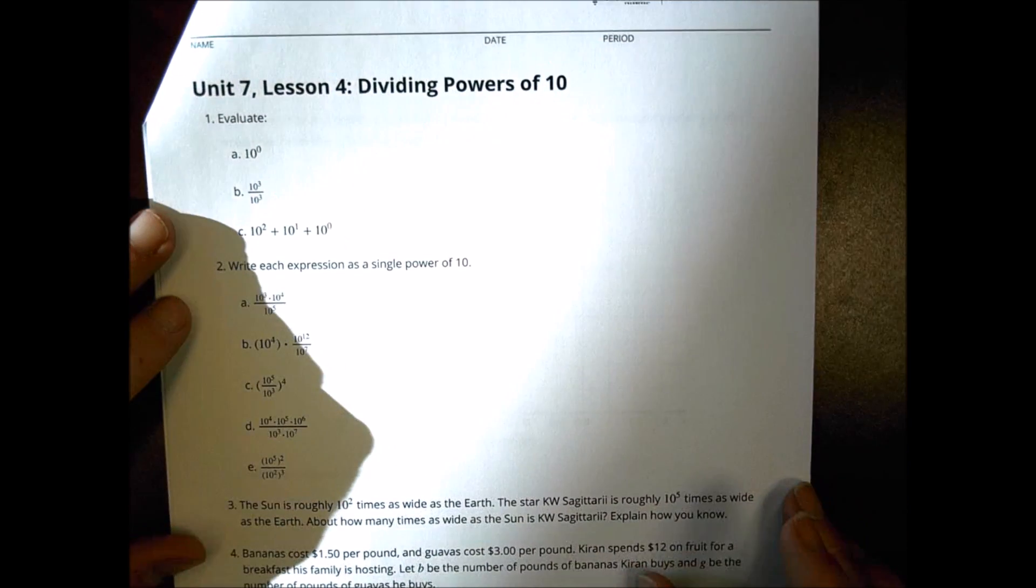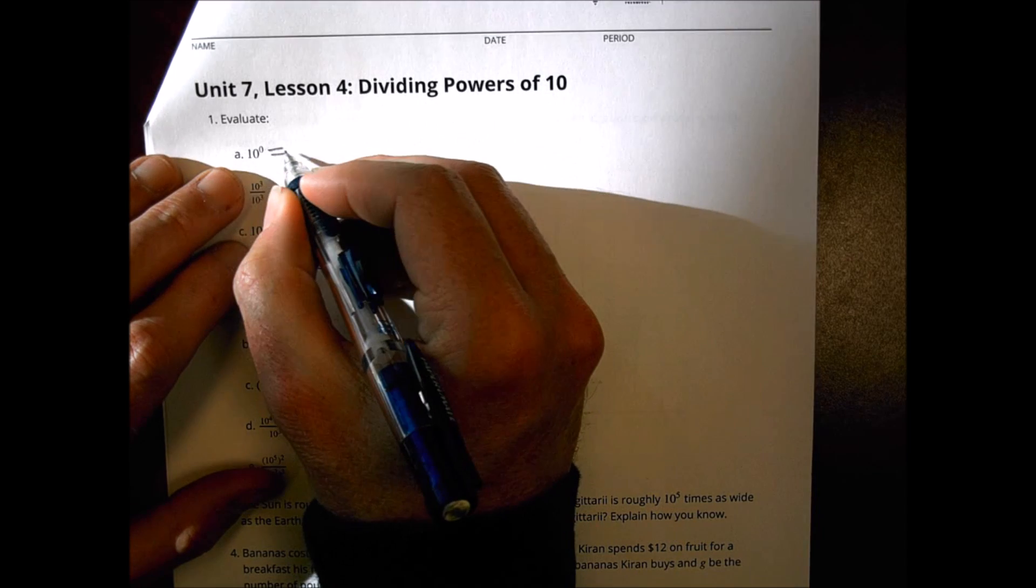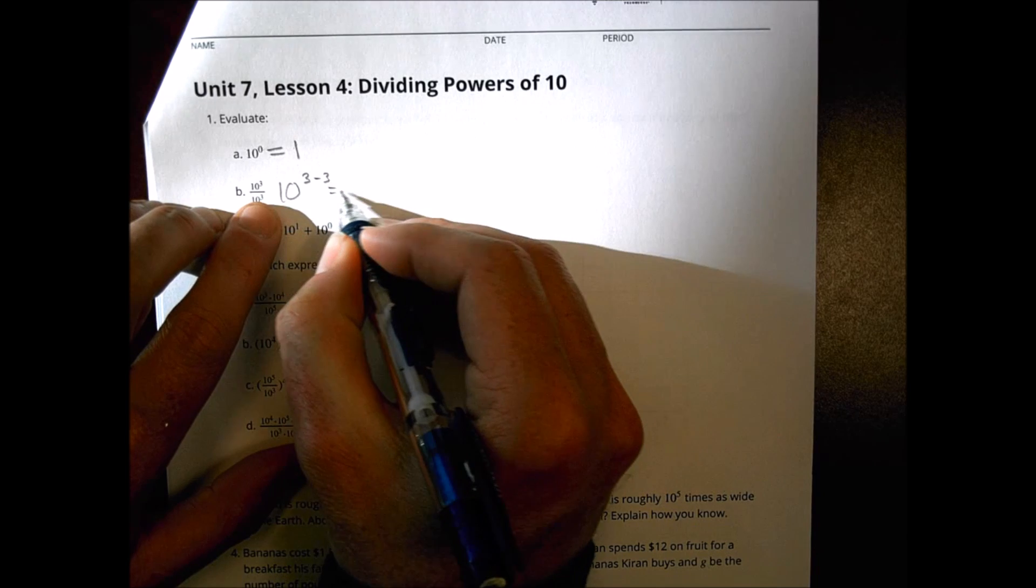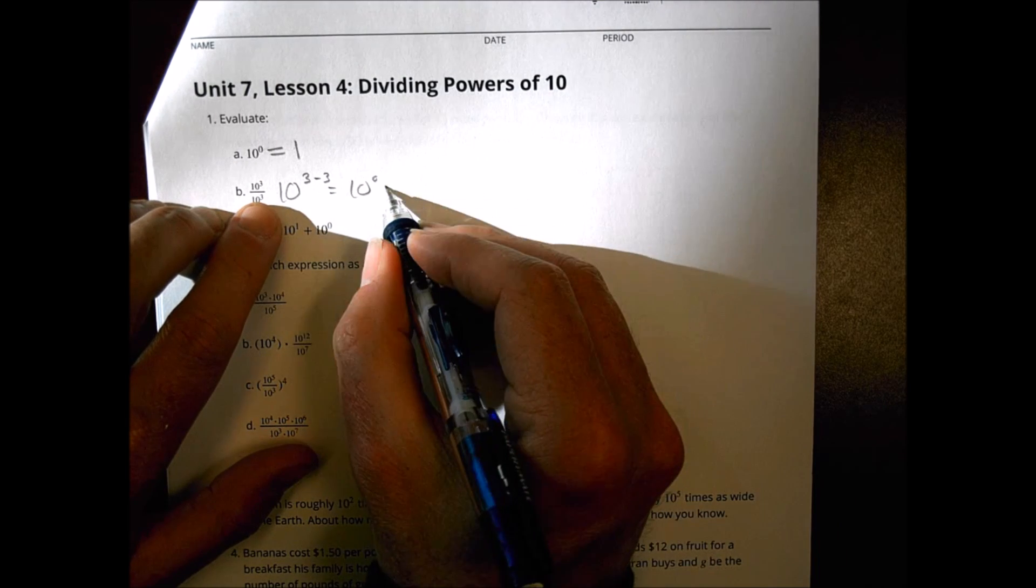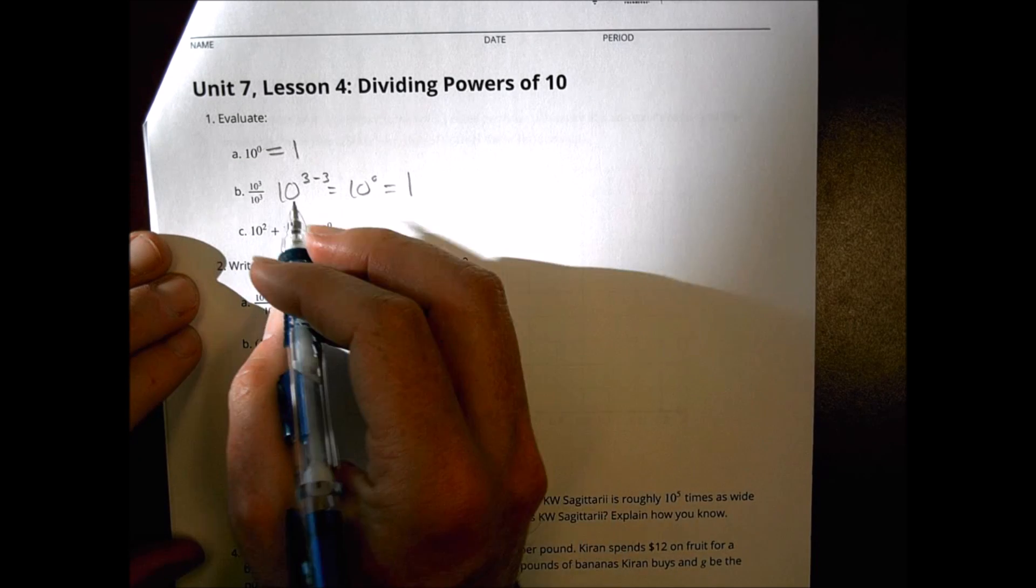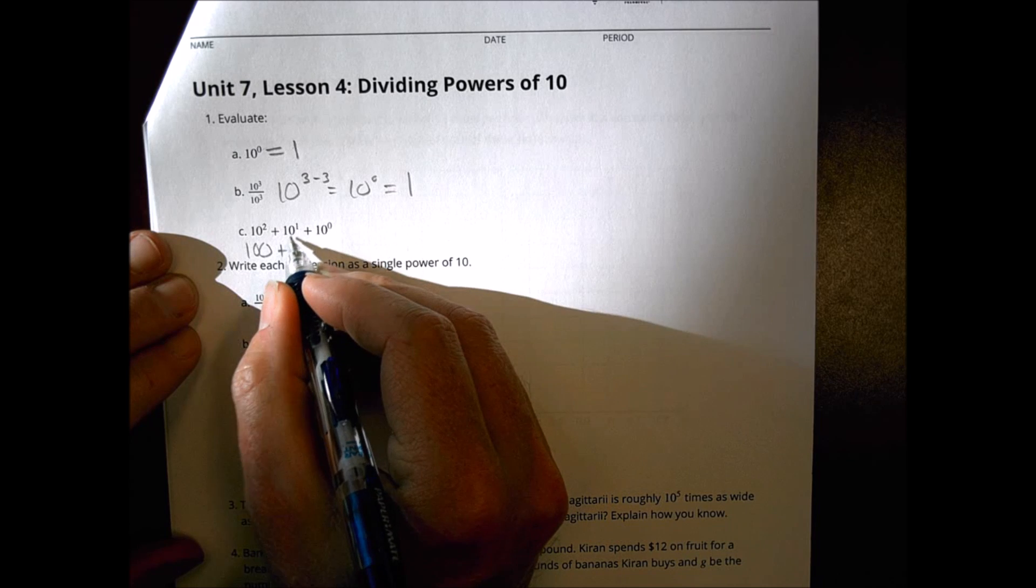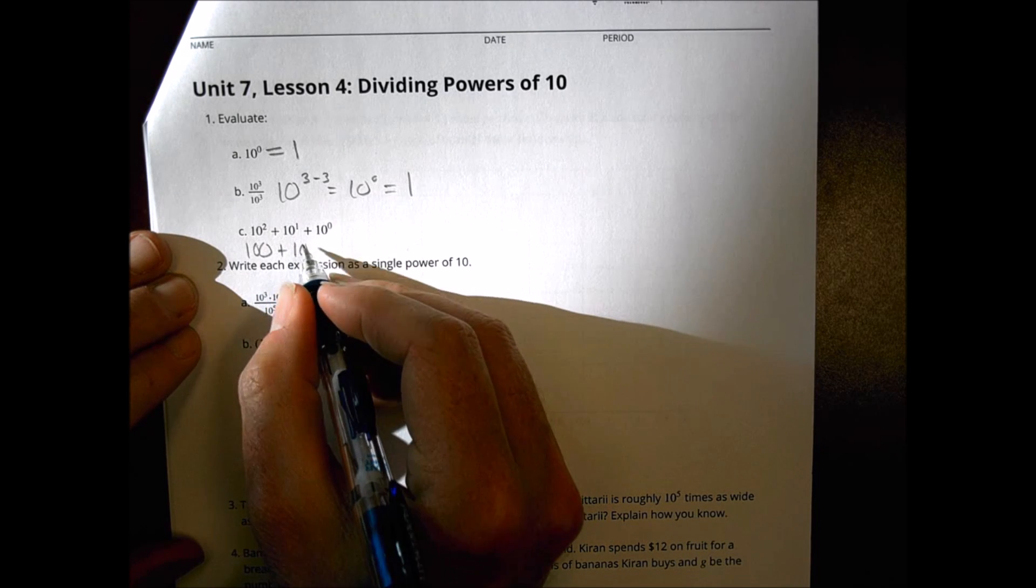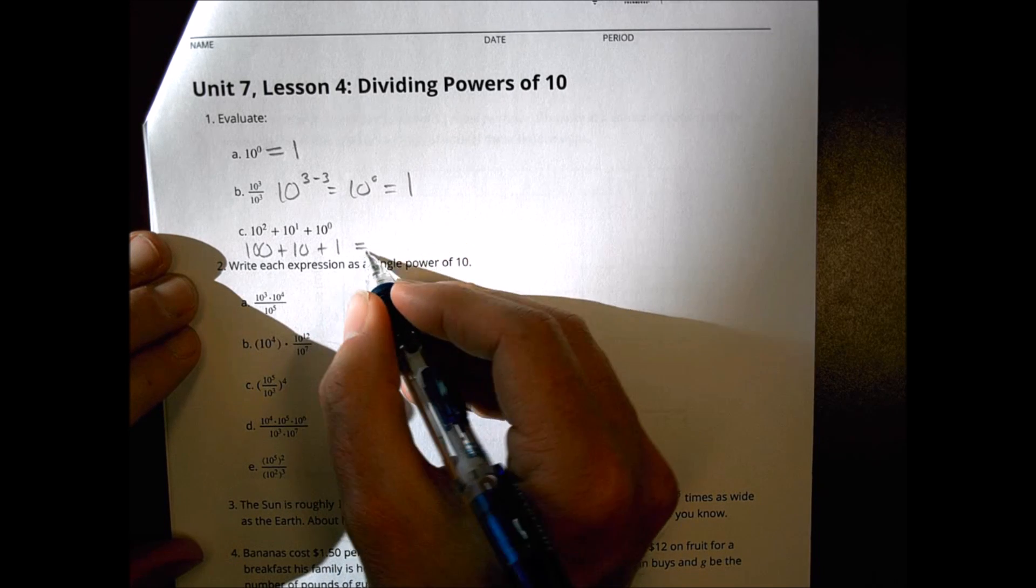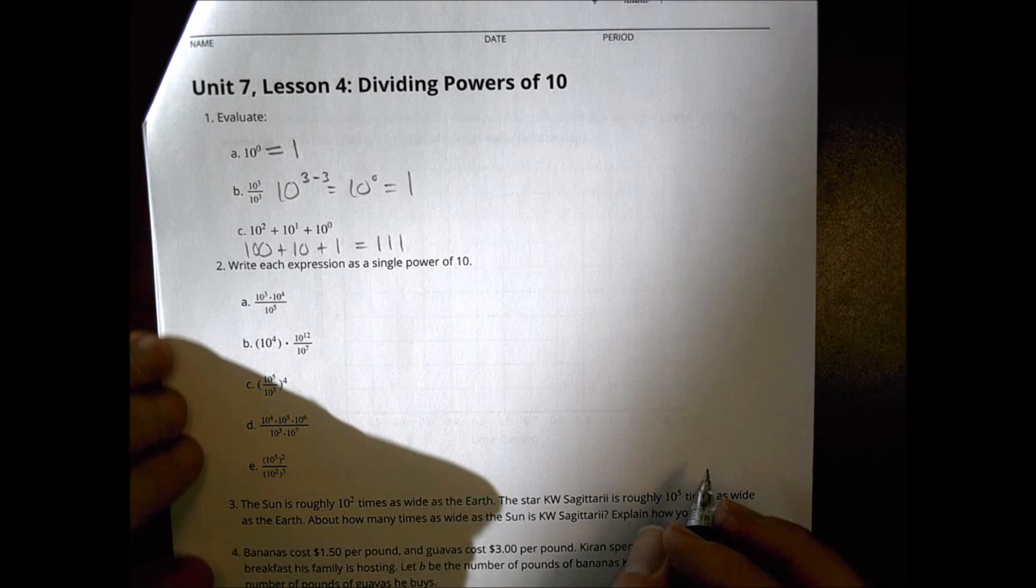All right. Homework today. Let's evaluate this here. Ten to the zero power, ten to the zero power is one. Here I have ten to the three minus three, which tends to be zero. And the zero power is one. Here a little more complicated, but not really. Ten squared is 100 plus ten to the first power is ten and ten to the zero power is one. So one hundred plus ten plus one is one hundred and eleven. So don't get too tricked up there.